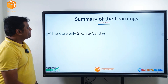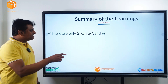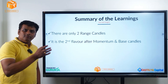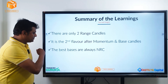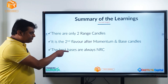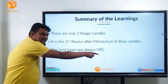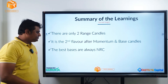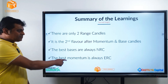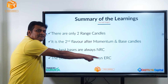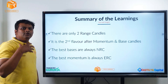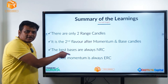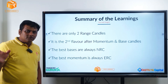Coming to the summary, there are only two range candles. It is the second flavor compared to both momentum and bases. And finally, the best bases are always NRCs — we will talk about it in future presentations. And the best momentum is always an ERC. I will probably schedule one more session to explain why those kinds of candles are special and good for retail traders.